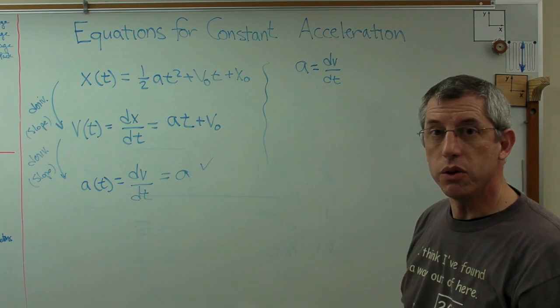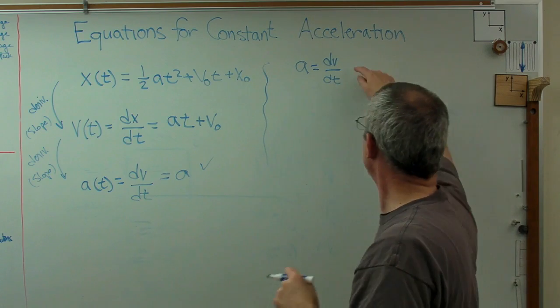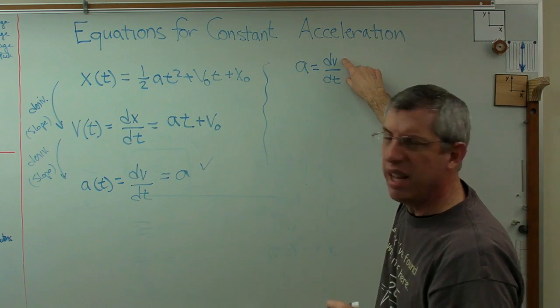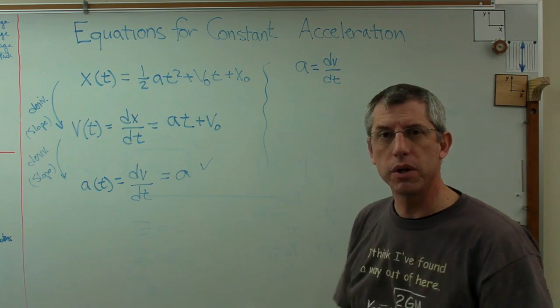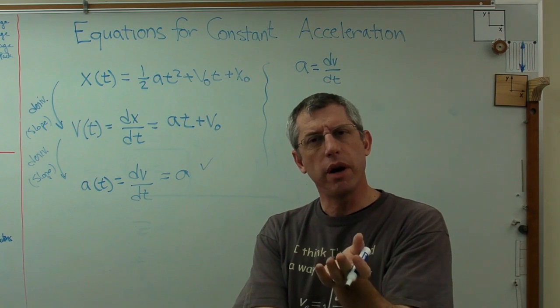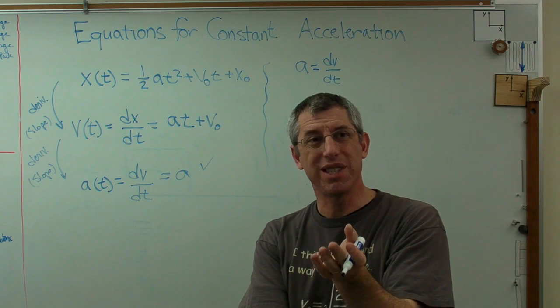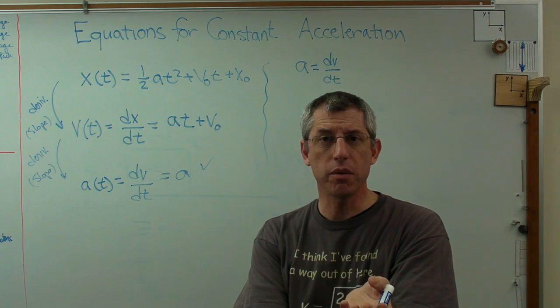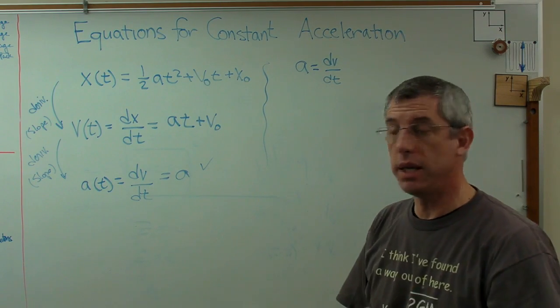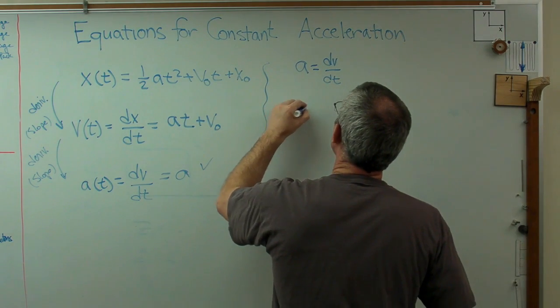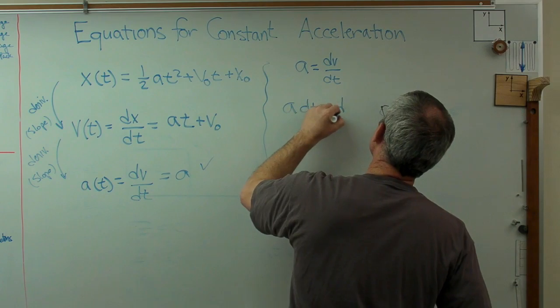Remember dv and dt, those are little teeny weeny numbers. We don't necessarily know what they are. They're infinitesimally small. So we don't actually have a value for them, but they are numbers. Well if you don't have a value for a number but you need to push it around an equation, you use a variable, right? dv's act like variables. So I can multiply through by dt if I want to, and I can get a dt equals dv.